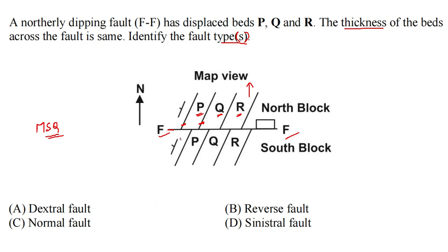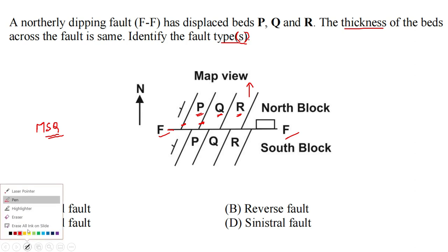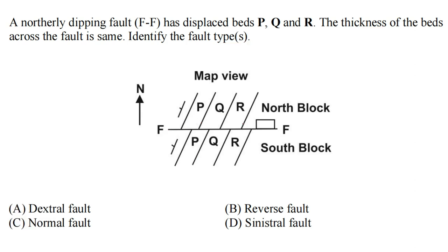We can see a very straightforward pattern: all the beds in the north block have shifted towards the left with respect to the beds in the south block.